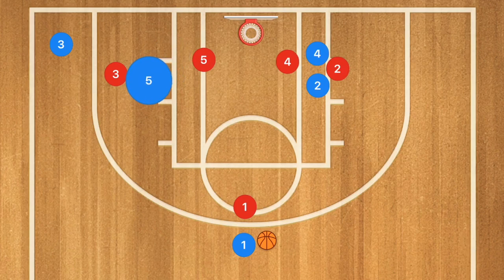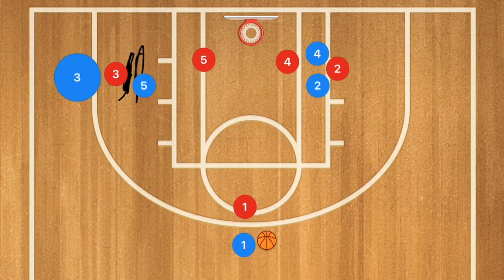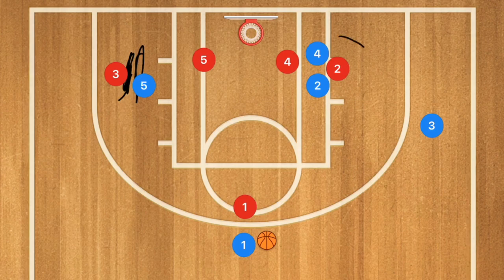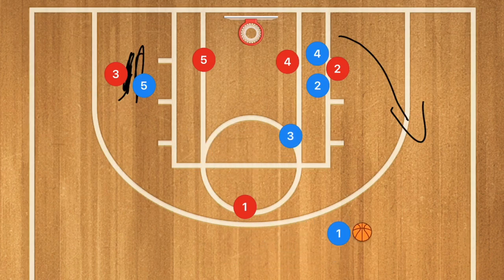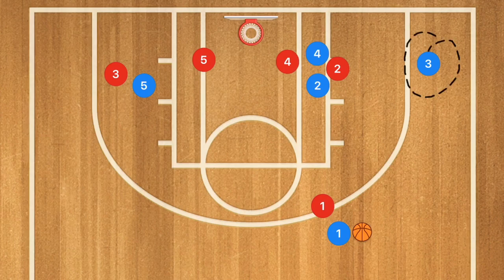Player 5 is going to set a screen for player 3, and player 3 is going to either cut baseline or cut over the top — it's up to him depending on how his defender plays him. If he goes over the top, he's still going to be using players 2 or 4 as a screening option. If he goes underneath, he'll go along the baseline but pop up a bit higher, and player 1 will pass player 3 the ball. If player 3 is going over the top, player 1 might want to dribble to that side because player 3 will be getting deeper for the 3-point shot from the corner.